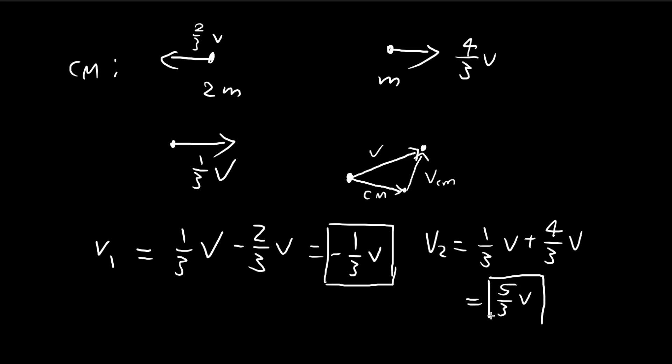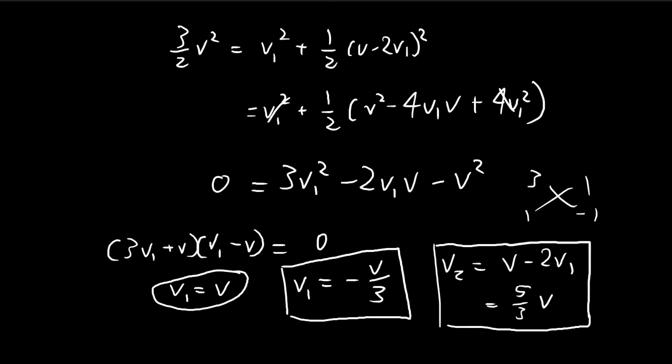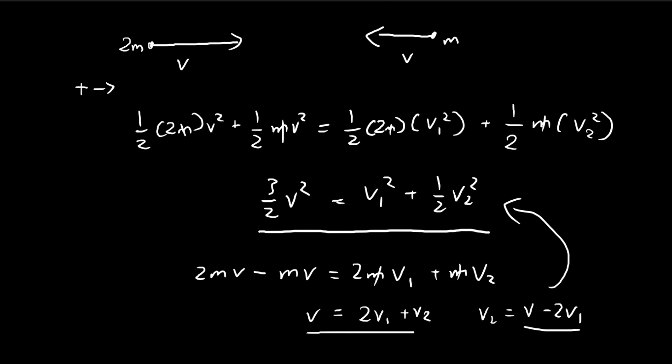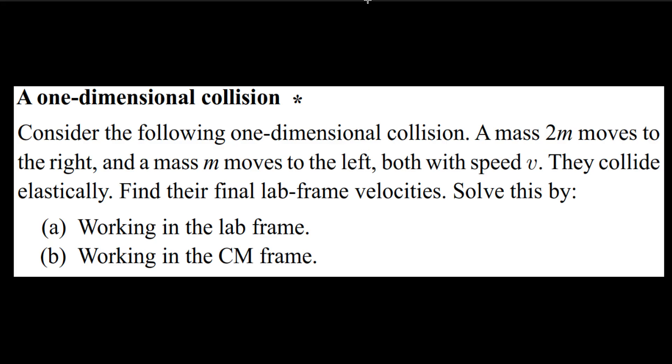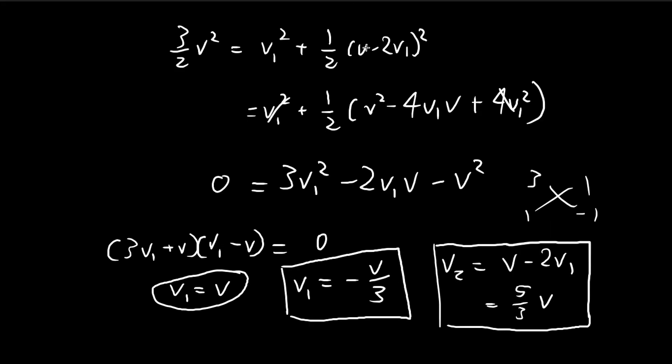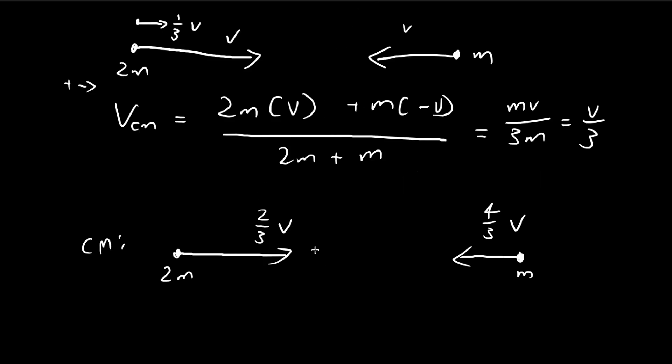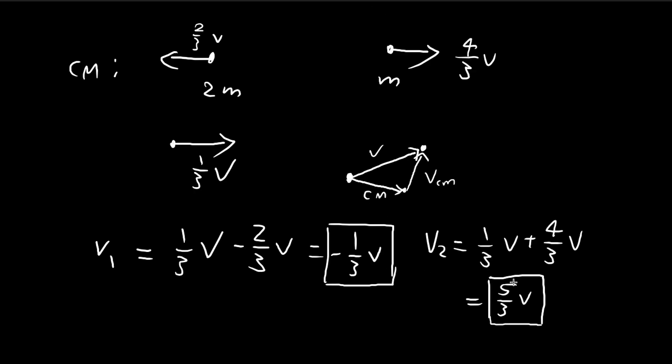And then you see that using the center of mass, we actually avoided all the algebra that we had to deal with before. So before we had all these annoying polynomials and a quadratic equation. And now all we have to do is just apply the rule that the velocity switches signs, and then we can very easily find our answer.